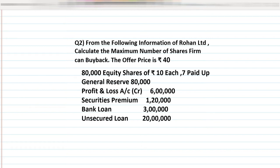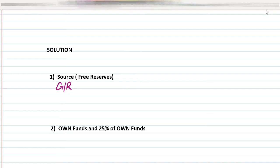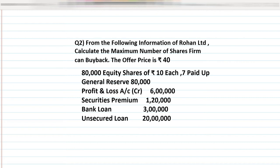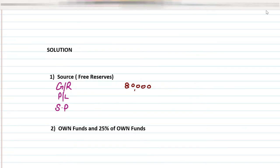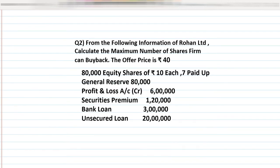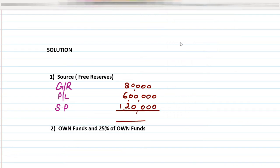Working Note 1 is sources, also called free reserves. I am writing: General Reserve, Profit and Loss, and Securities Premium. General reserve amount given in the question is 80,000. Profit and loss is 6 lakhs. Securities premium is 1 lakh 20,000.